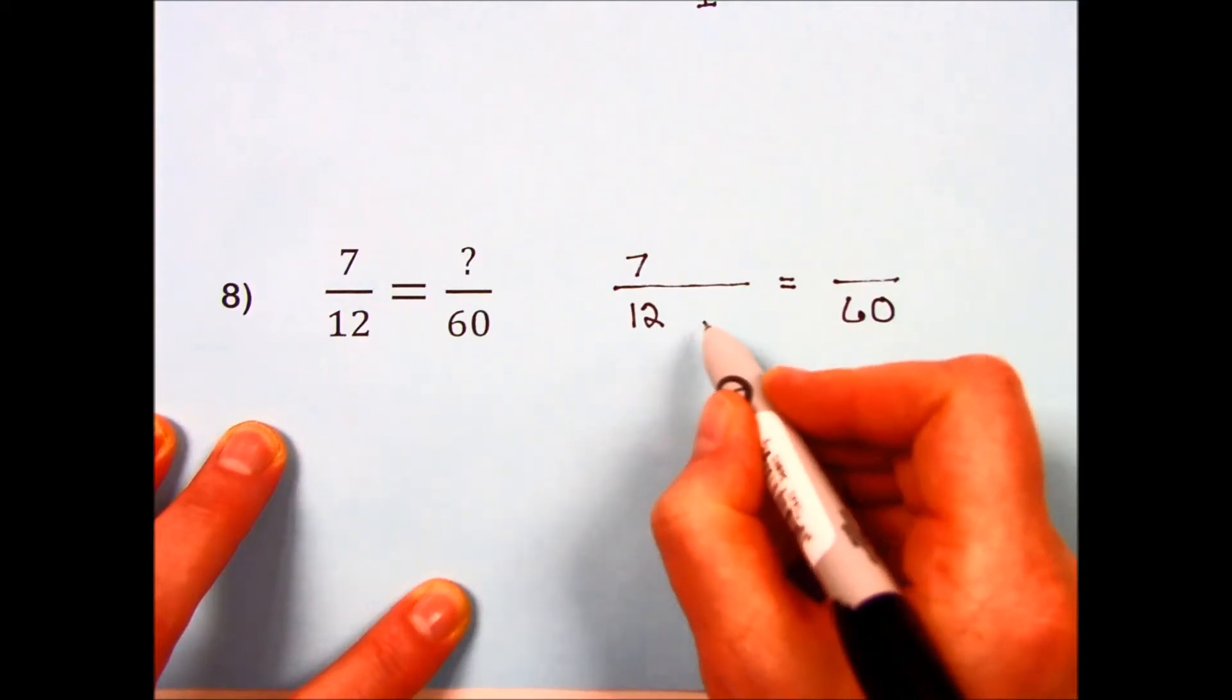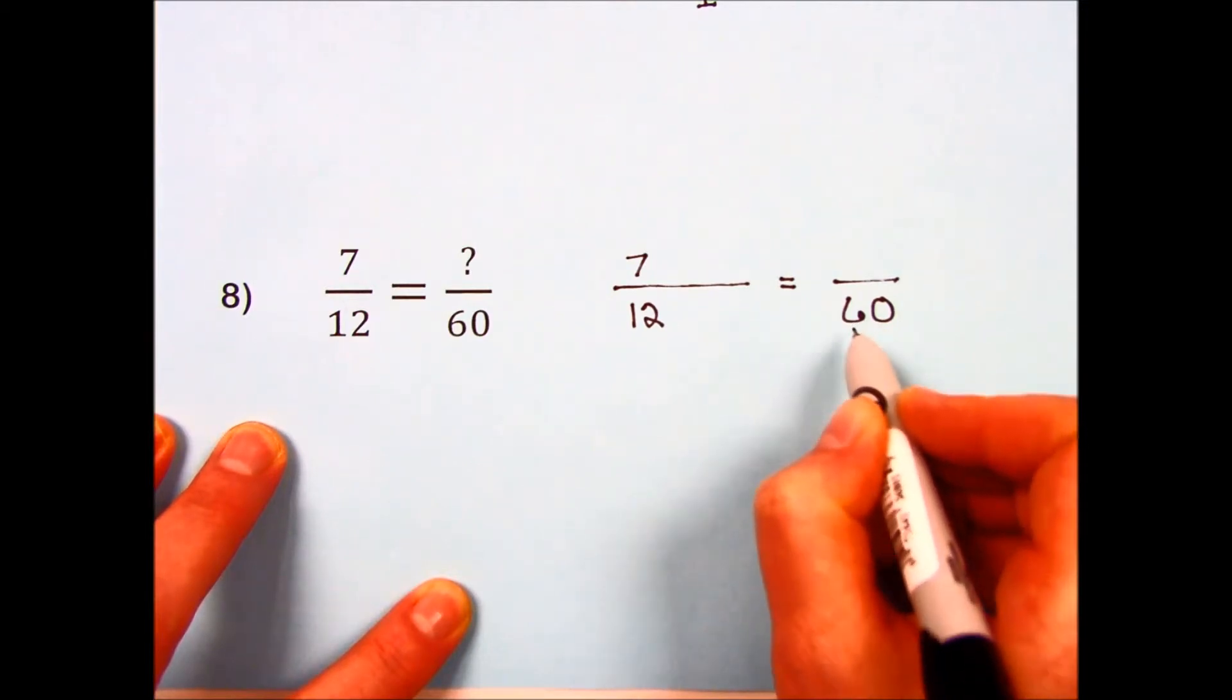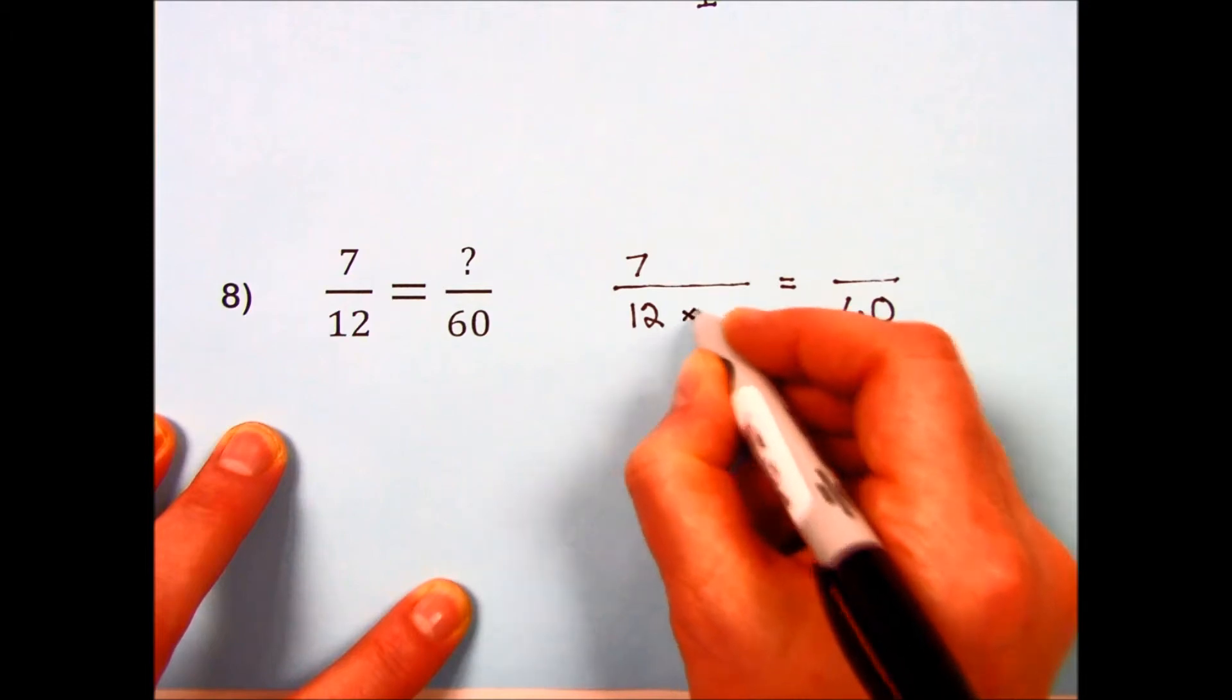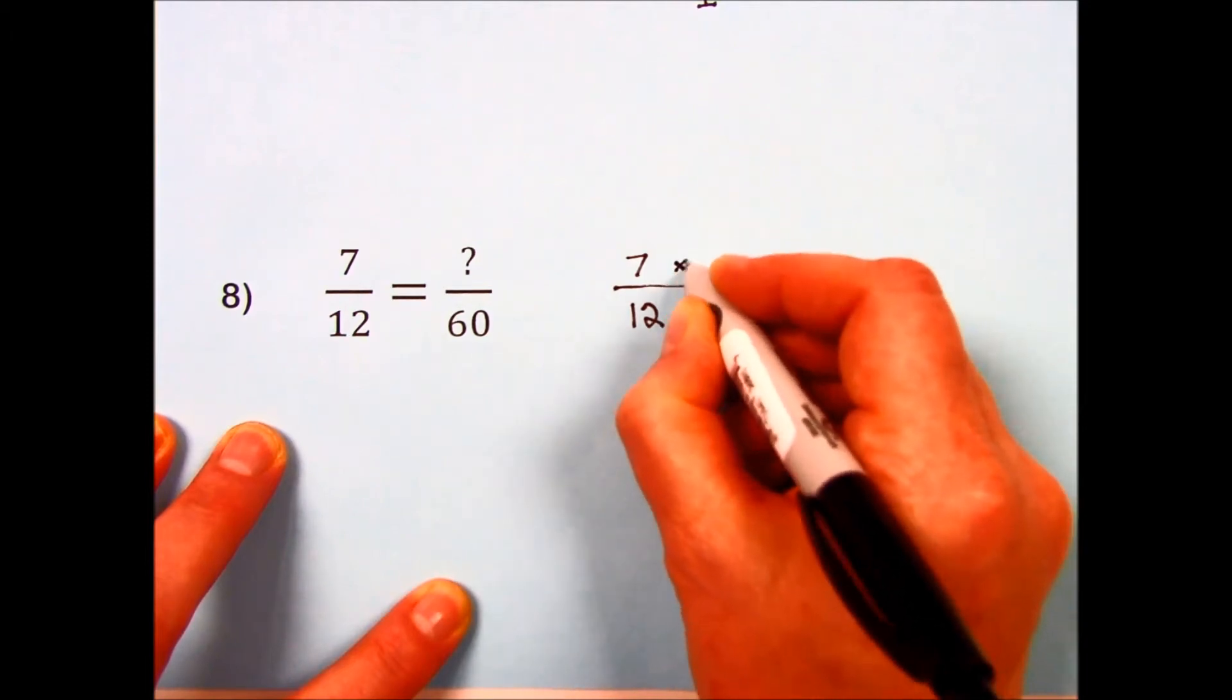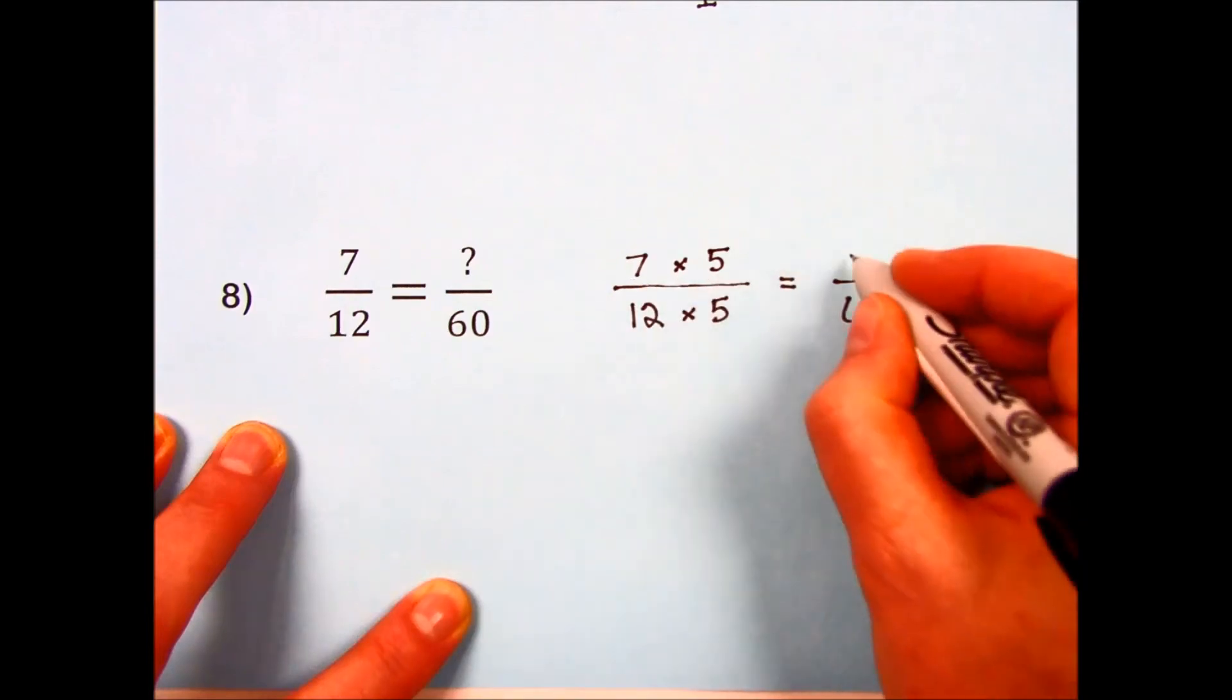12 times what gives me 60? If I'm not sure, I would grab a calculator and simply divide. 60 divided by 12 gives me 5. Same thing in the numerator. And I have 7 times 5 is 35.